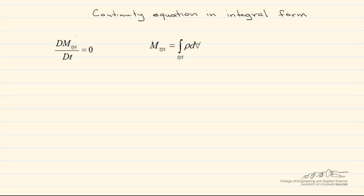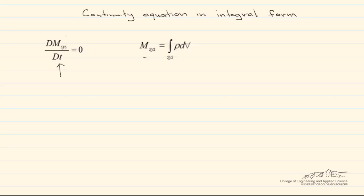The governing equation says that the time rate of change of the mass in the system, which is a collection of unchanging contents, has to equal zero. We can define the mass of the system as the integral of rho dV, so that's density times the differential volume over the entire system.